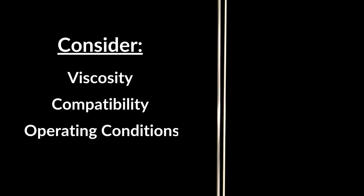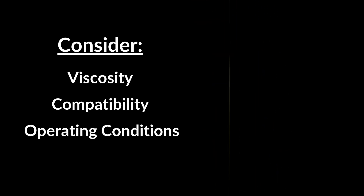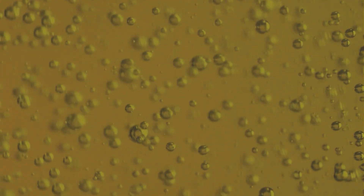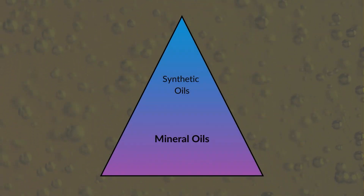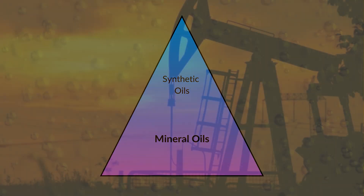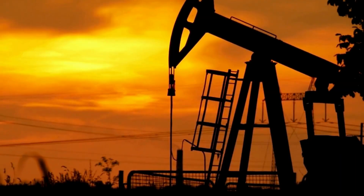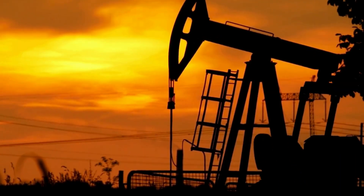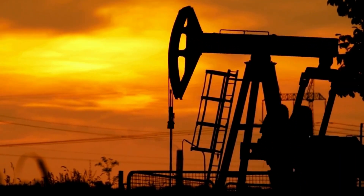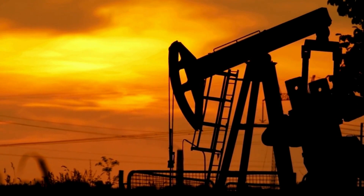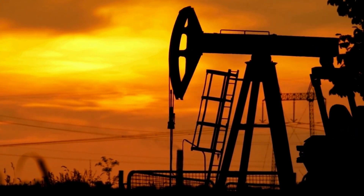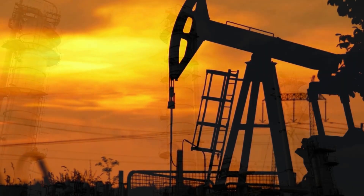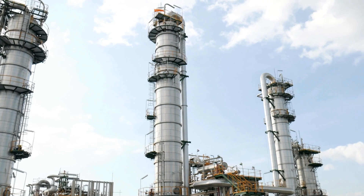First, let's talk about base oil types. Think about base oil types like a pyramid. At the bottom of the pyramid are mineral oils — petroleum-derived products and the most widely used, lowest-priced base oil type. They come in two forms: naphthenic and paraffinic.